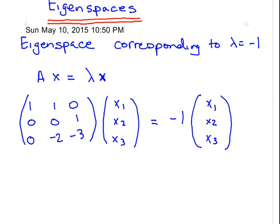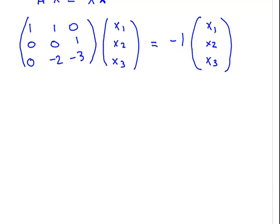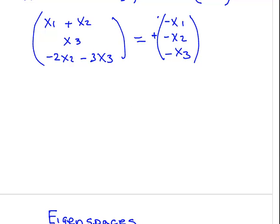This is the eigenspace for lambda equals minus 1. Same setup here. We're going to multiply out both sides. We would get x1 plus x2, x3 and minus 2x2 minus 3x3. That is equal to minus x1, minus x2, minus x3. Then we'll just simplify both sides, bring everything across to one side.